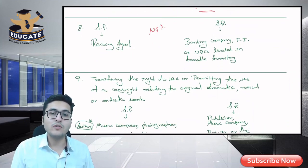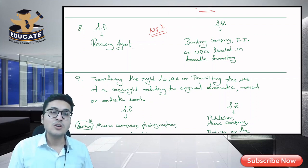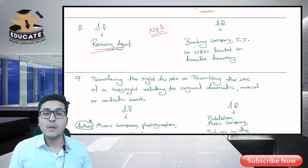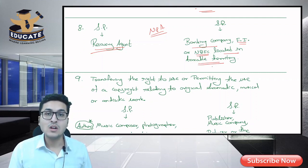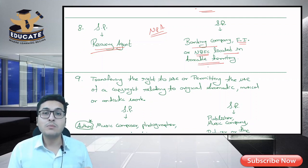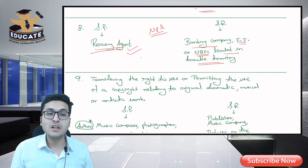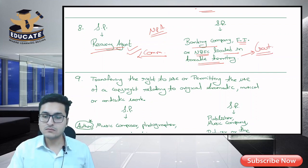Next is recovery agent. You may have heard of NPA — non-performing assets. Banks sometimes give loans and the money doesn't come back. In such cases, the banking company appoints a recovery agent to help recover the money from borrowers. The recovery agent earns a commission, paid by the banking company, financial institution, or NBFC. The tax on that commission is paid directly to the government by these companies.